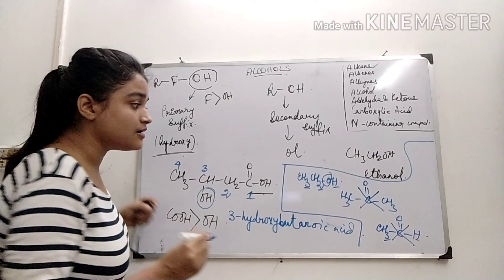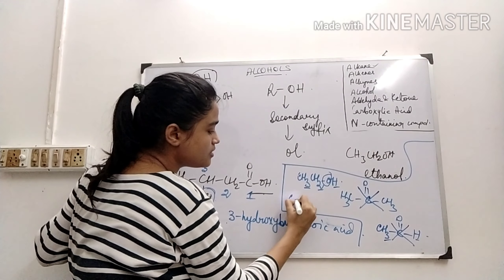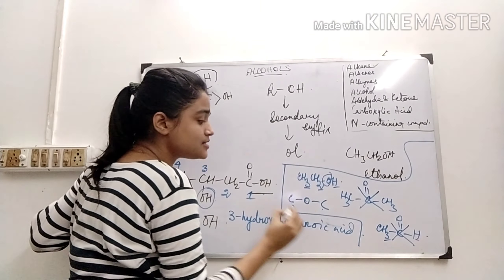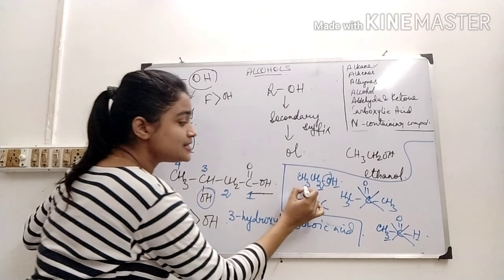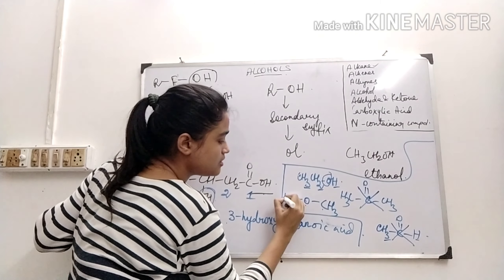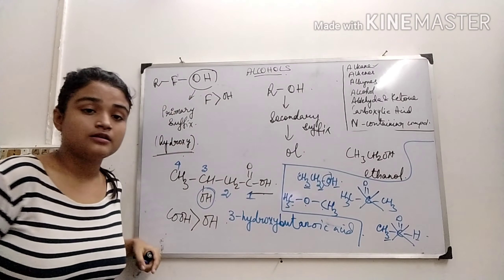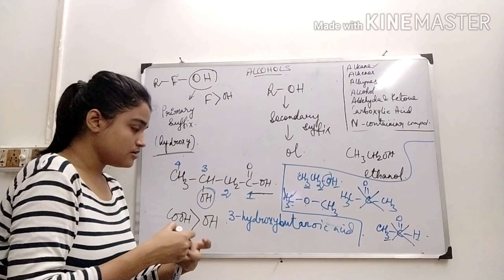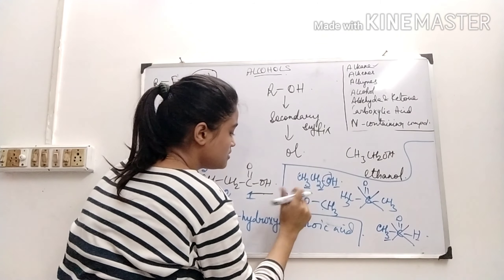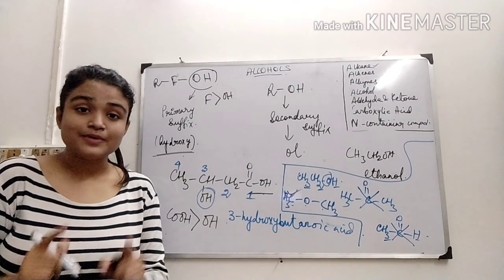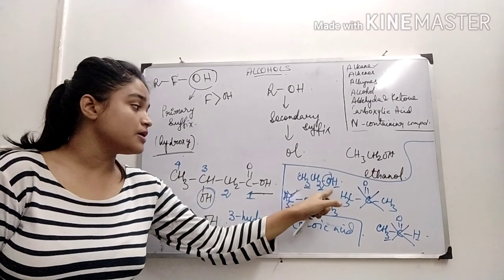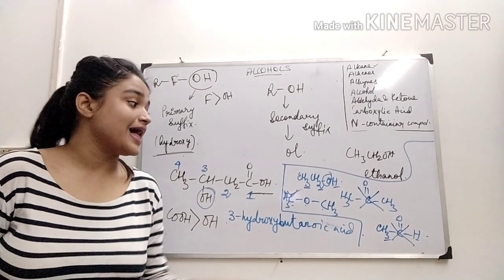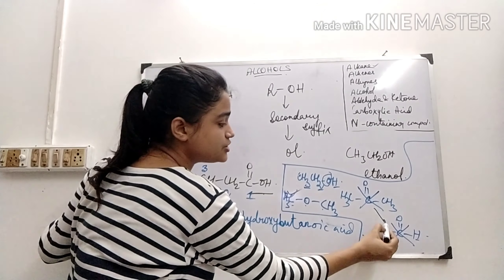Another one left is ether. So if I write ether — COC — two carbons, one oxygen, and six hydrogens. So this is okay. This is alright. That means ether is the functional isomer of alcohol, or alcohol's functional isomer is ether. It's not keto, not aldehyde. These two — alcohol and ether — are functional isomers.